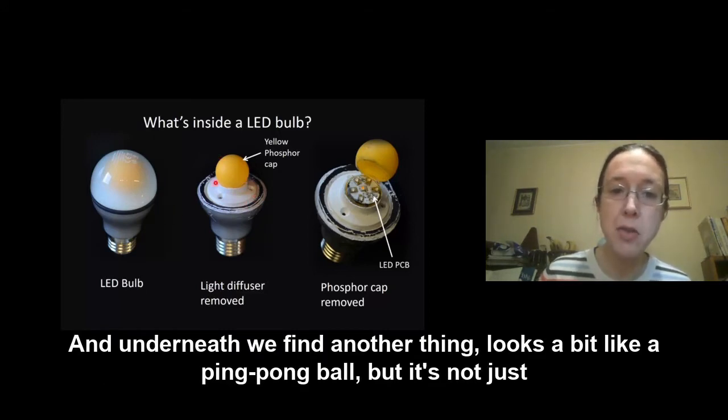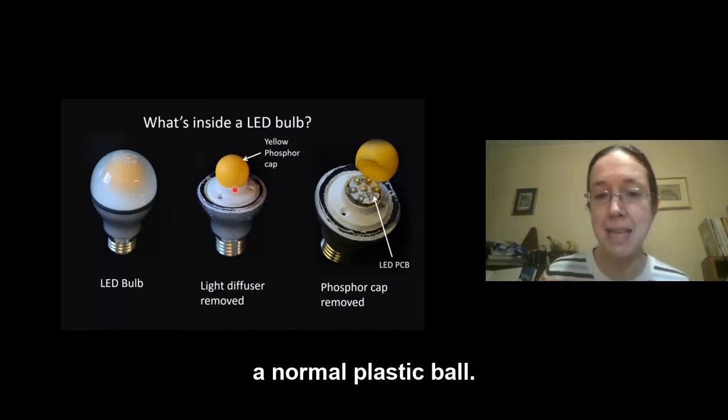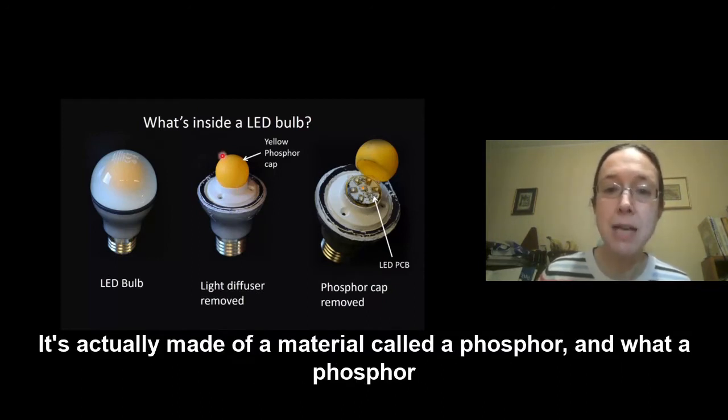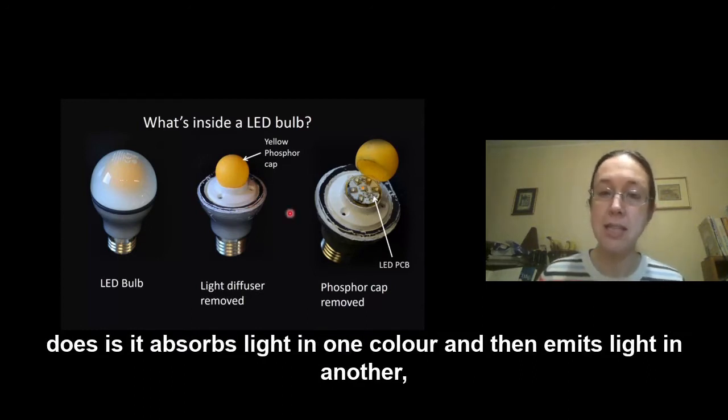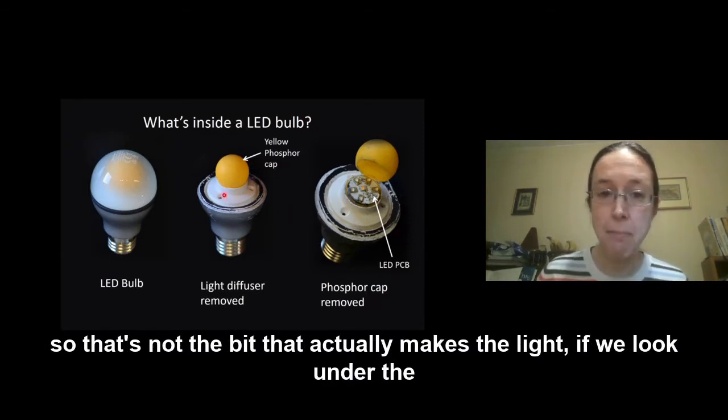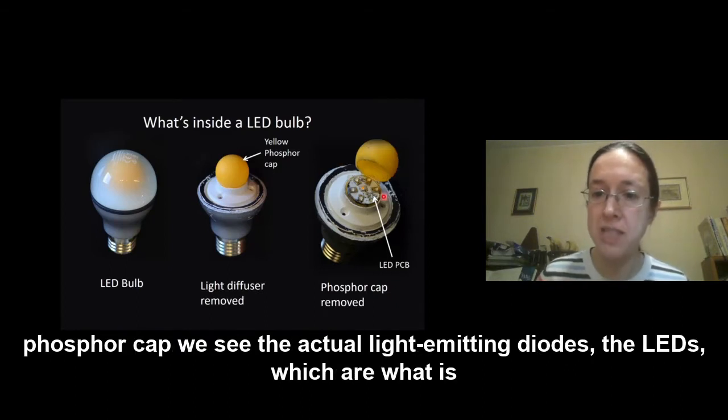And underneath we find another thing, looks a bit like a ping pong ball, but it's not just a normal plastic ball, it's actually made of a material called a phosphor. And what a phosphor does is it absorbs light in one colour and then emits light in another. So that's not the bit that actually makes the light. If we look under the phosphor cap we see the actual light emitting diodes, the LEDs, which are what is going to give out the light.